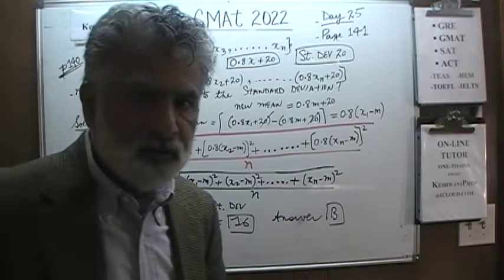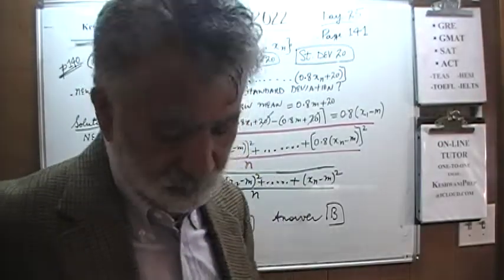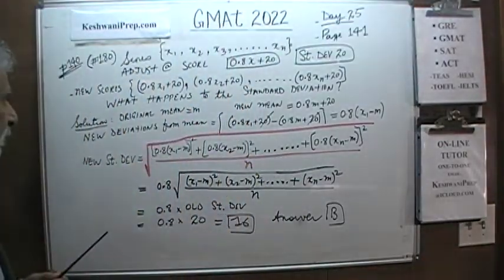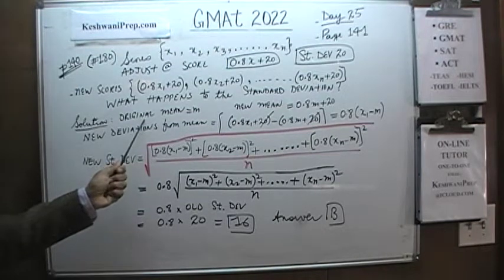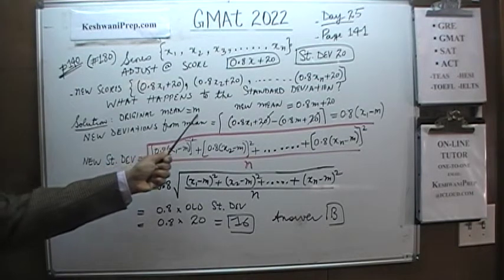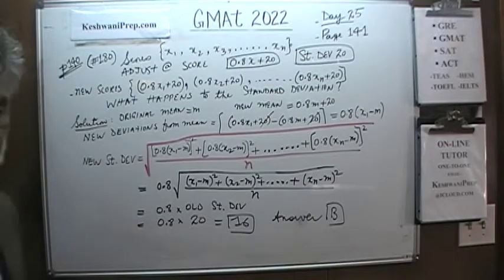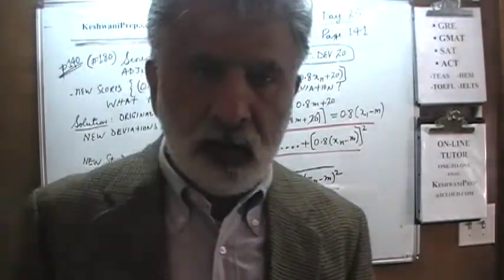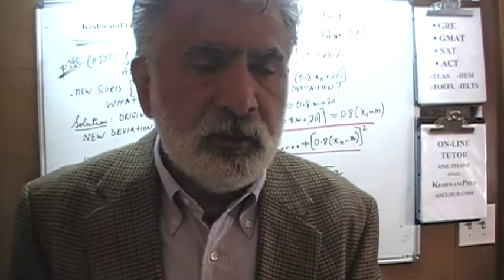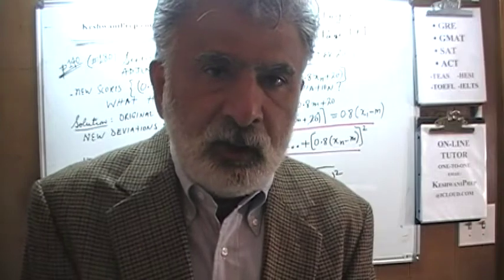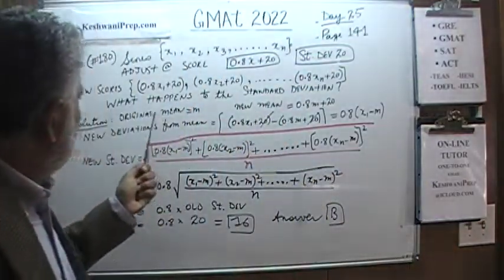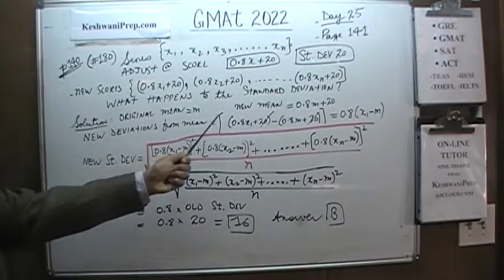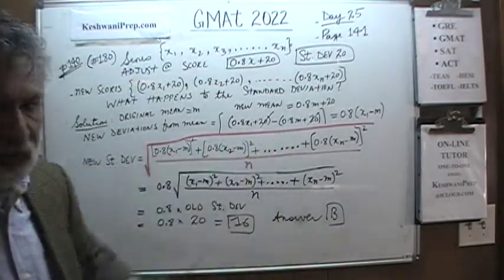Does the standard deviation remain the same or does it change? Let's see. The original mean we'll call m. If you have a set of numbers and add 15 to each score, the new mean is 15 more than the old one. If you multiply each score by half, the new mean is half as much. So here, since the original mean is m, the new mean is simply 0.8m + 20.